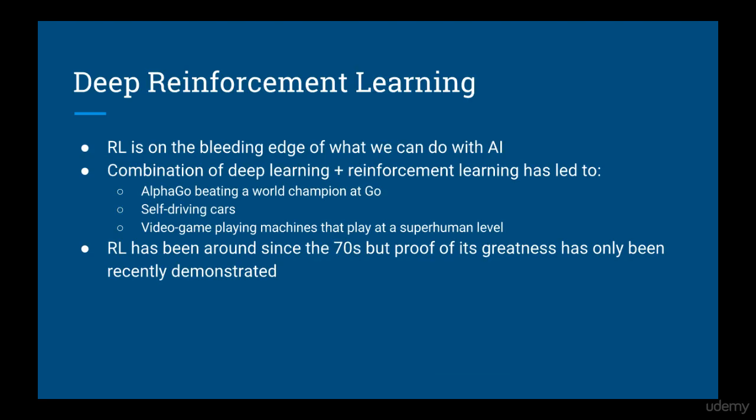If you've taken my first reinforcement learning class, then you know that reinforcement learning is on the bleeding edge of what we can do with AI. Specifically, the combination of deep learning with reinforcement learning has led to AlphaGo beating a world champion in the strategy game Go, it has led to self-driving cars, and it has led to machines that can play video games at a superhuman level. Reinforcement learning has been around since the 70s, but none of this has been possible until now.